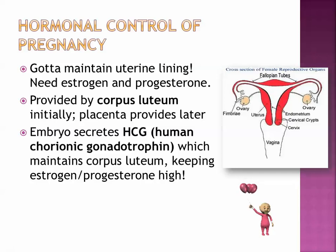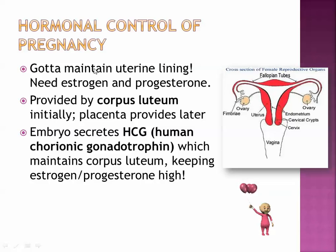A couple of things have to happen here. Remember, the hormones that are important for maintaining the uterine wall are estrogen and progesterone. If you remember the word FELP — F-E-L-P — those are four hormones: FSH, estrogen, luteinizing hormone, and progesterone. Remember, at the end of the menstrual cycle, progesterone usually drops and then the uterine wall breaks down. But if you want to keep that blastocyst implanted in the uterine wall, you need to keep this uterine wall there. You don't want progesterone levels to drop, so you need estrogen and progesterone.